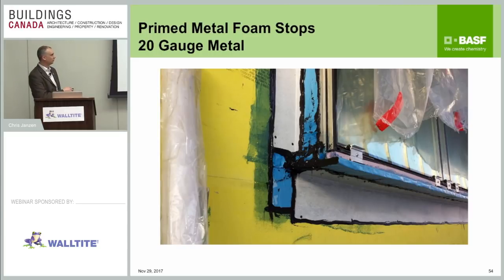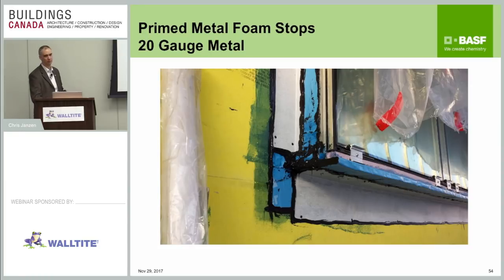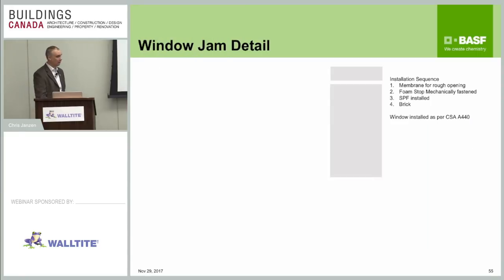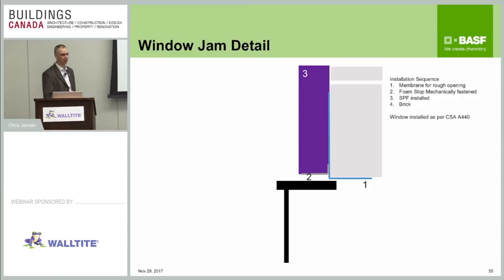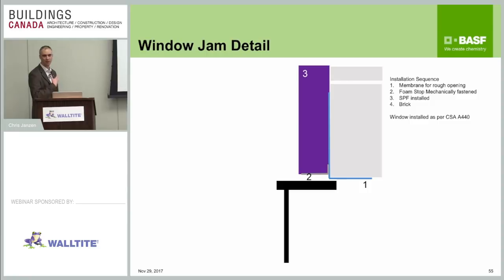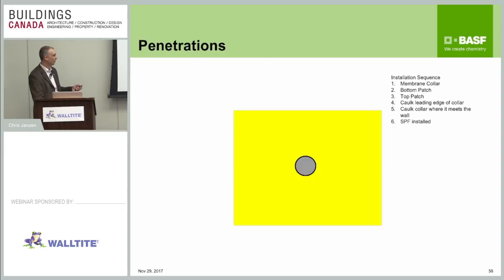Here's an example of some foam stops — where the membrane returns onto the window frame. By putting in 20-gauge primed metal foam stops — essentially metal angle — the foam has a nice place to terminate with good bond to the drywall and to the primed metal, and it's not sticking to the window frame. For a window jamb detail, it's straightforward: put the membrane down, put your foam stop. Another nice thing about foam stops is that you're mechanically fastening the membrane in place, so even if it's a different trade doing the work, they don't need to worry about quality of the adhesive bond — the mechanical fastening means it stays. Brick goes on.